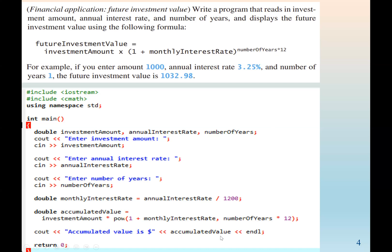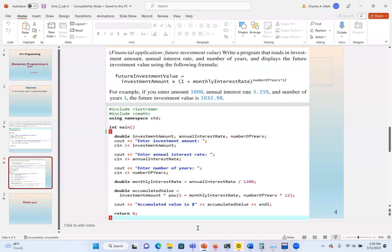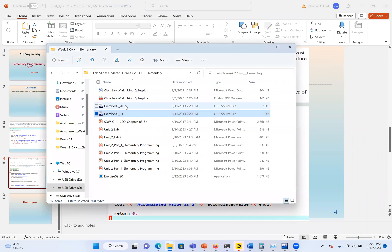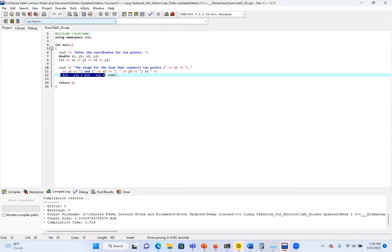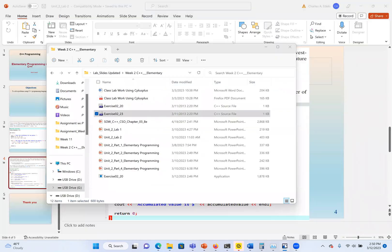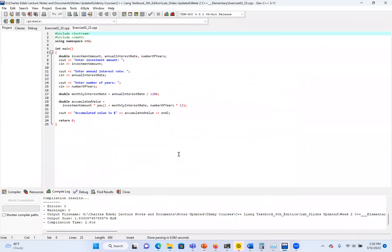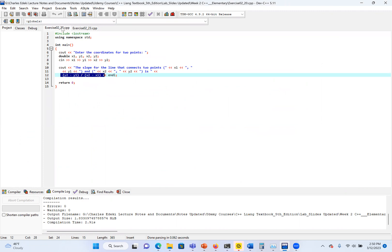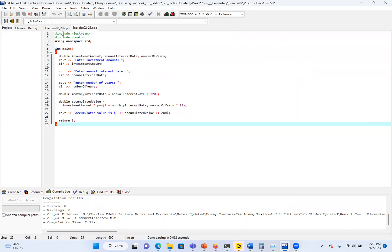After we calculate, we print the results. We can also see the code. The code is open here for us. The reason we are importing cmath is because we are using the power function.